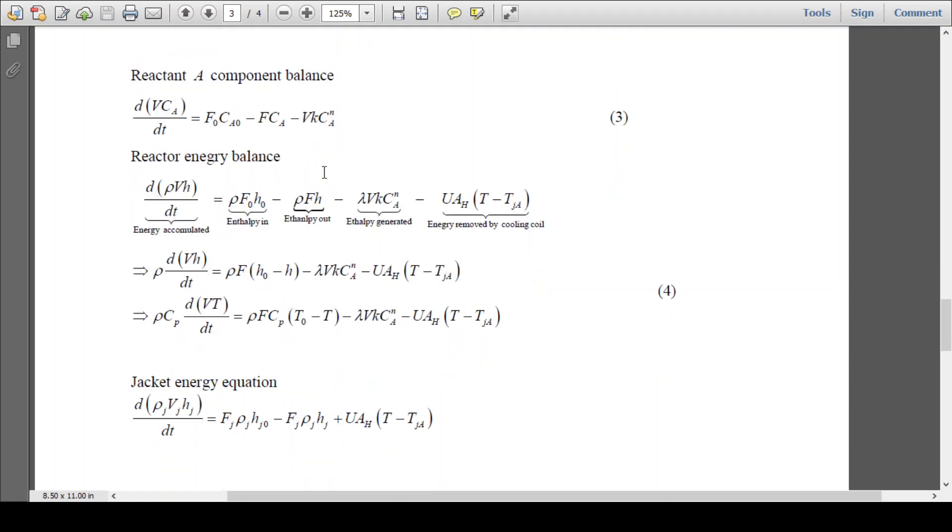Energy balance inside the reactor: d(ρVh)/dt - energy accumulated inside the reactor, enthalpy coming into the reactor, enthalpy going out from the reactor, enthalpy generated with the reaction, and energy removed by the cooling jacket. So here T - Tg average actually, so we have taken the average temperature of the jacket.